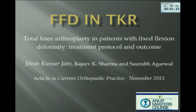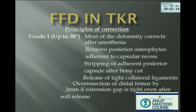In summary, for arthroplasty in place with fixed flexion deformity: up to 30 degrees, most of the deformity corrects under anesthesia — that is why it is important to assess your patient before you start cutting. Remove the osteophytes. Strip lateral and posterior structures after your bone cuts. Tight collateral ligaments may have to be released if there is a three-dimensional problem. Over-section of the distal femur by two-millimeter increments only — and test, test, test again.